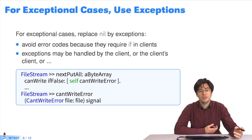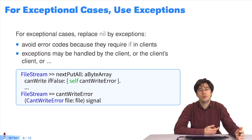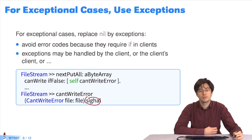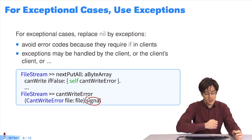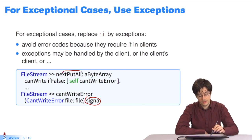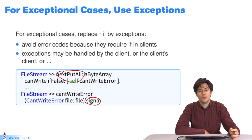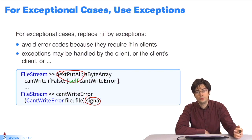For exceptional cases, such as when you have a file stream that has not been opened for writing and shows an error, instead of returning nil, we inform the system by raising an exception. In Pharo, we call this signaling an exception. We create an instance of the exception class or subclass and send the message signal. This avoids obliging the client of the method to test if it is nil when a problem has likely occurred. Either the client handles the exception, or it's handled by the client of the client, and so on. We can focus on one specific level to capture the exception. It avoids overuse of ifs.